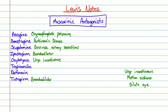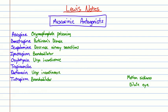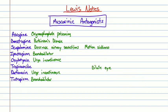Another urge incontinence medication is darifenacin. Motion sickness — that's the tricky one — goes to scopolamine, used as a little patch placed behind the ear. And to dilate the eye, that's tropicamide, which is not quite as potent as atropine, which we used many years ago for that purpose. That's the end of Lewis Notes.